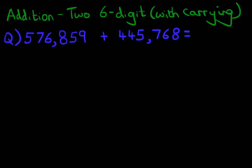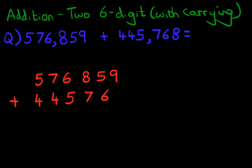But let's do what we always do. Let's convert this horizontal formatted question into the vertical format. So let's do that over here. 576,859 plus 445,768. Now make sure you get this right.